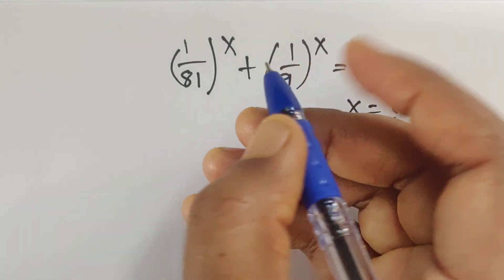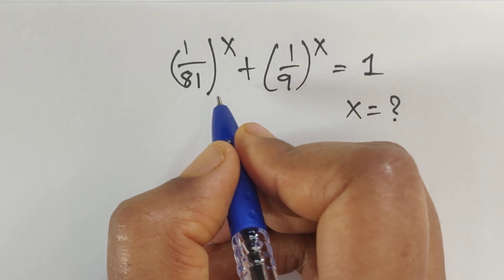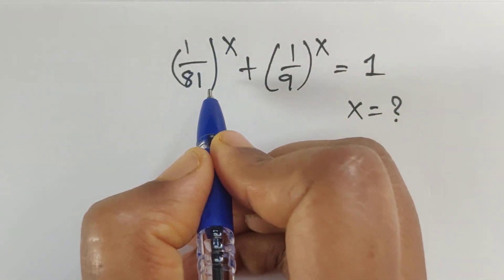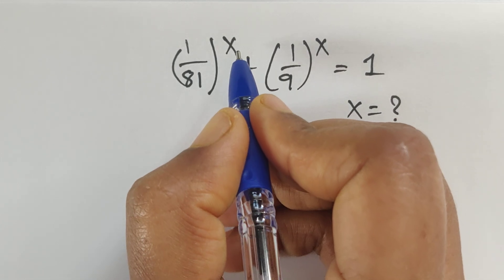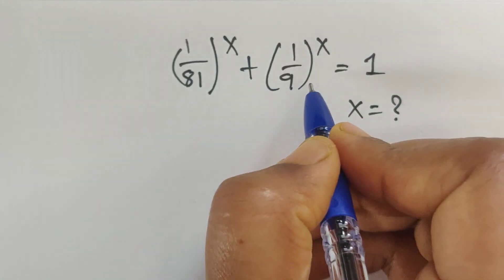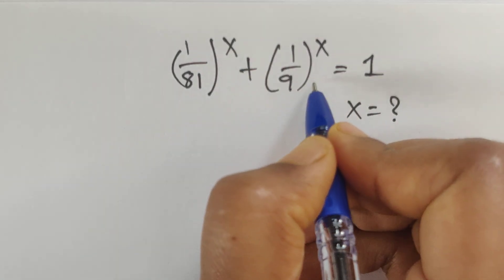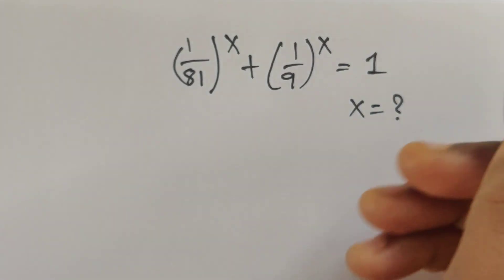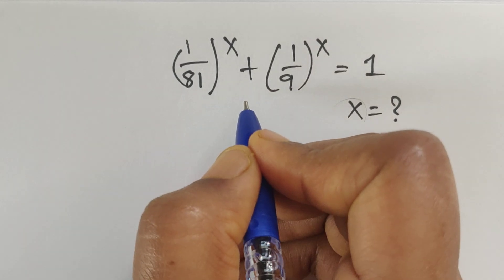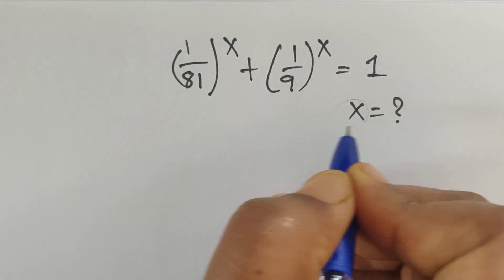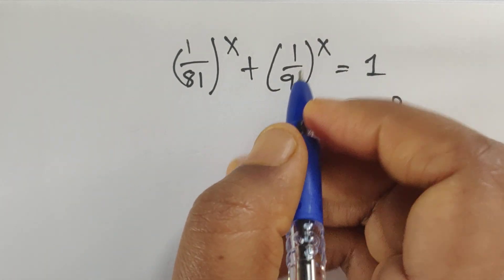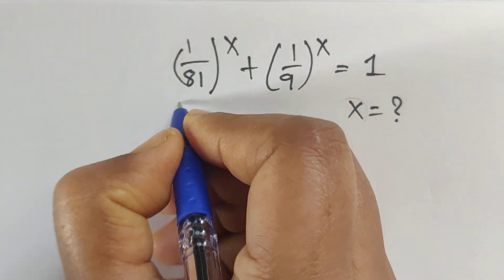Hello everyone, welcome back to our channel. Here we have one question: 1 by 81 to the power of x plus 1 by 9 to the power of x equal to 1. In this problem we have to find the value of x. So how do we solve this problem? Let's see.